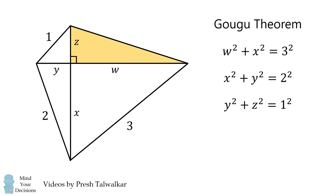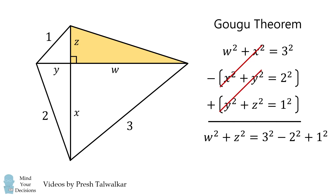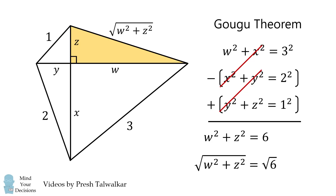We want to calculate the hypotenuse of this right triangle. To do that, we'll subtract the second equation and then add the third equation. In doing so, we will cancel out the x squared and y squared terms. We're left with w squared plus z squared is equal to 3 squared minus 2 squared plus 1 squared. This means w squared plus z squared is equal to 6. The hypotenuse will be equal to the square root of this. Therefore, the square root of w squared plus z squared is equal to the square root of 6. And that's the answer to this problem.